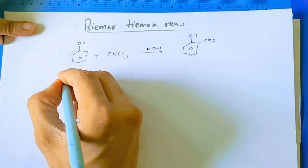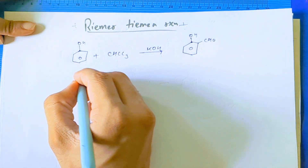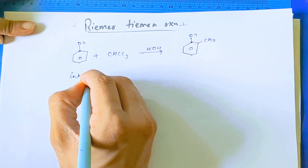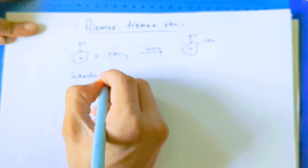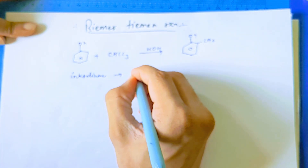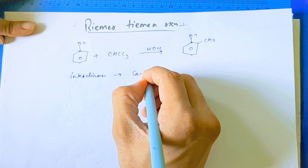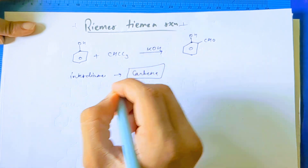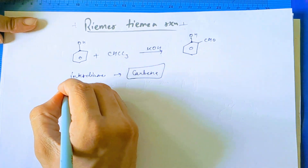Now, first you have to know that here the carbene intermediate formation occurs — carbene intermediate. Now let's see the mechanism.